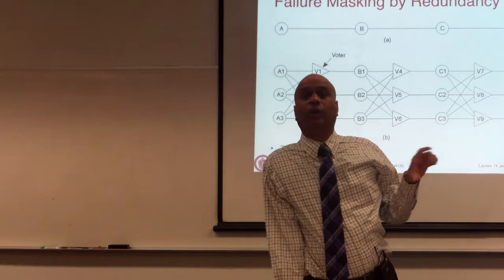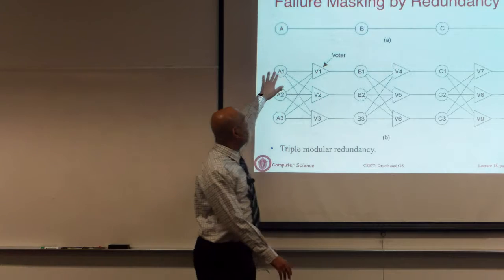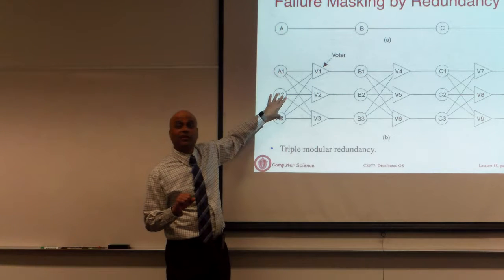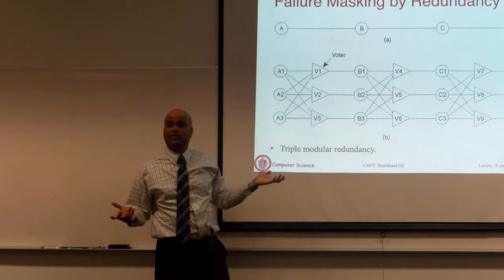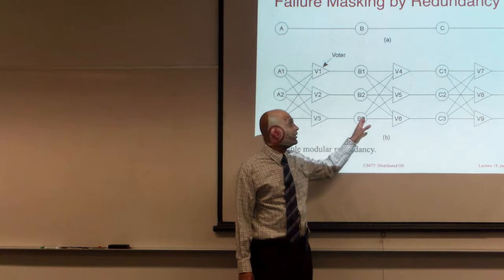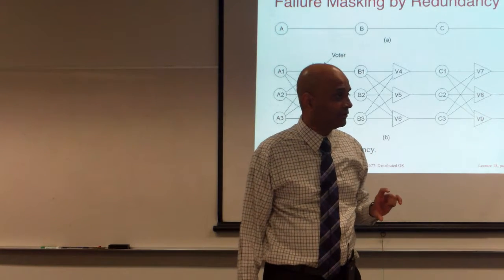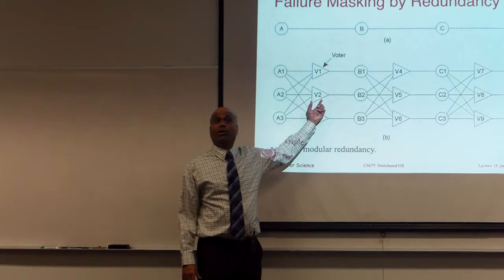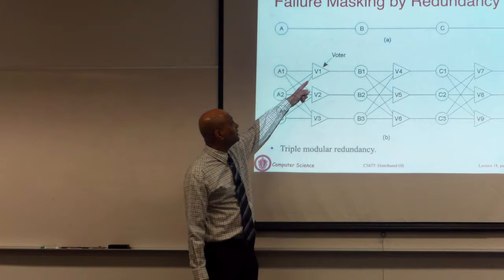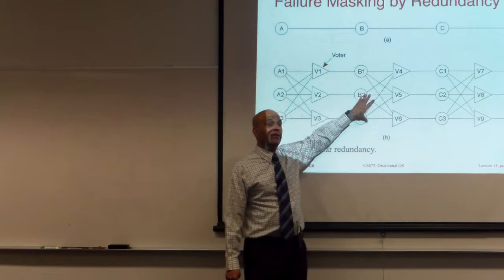If A1 fails in a Byzantine manner and starts producing garbage while the other two function correctly, the voter picks the majority of the three outputs and gets the right response. This is fed to the next stage. If you have only one voter circuit, that itself is a single point of failure — which is why the voter is also replicated with three voters. If one voter produces garbage, the other two still produce the right result, and that gets corrected in the next stage. This applies to software systems as well — you might replicate a server, send each request to all replicas, and vote on the results.